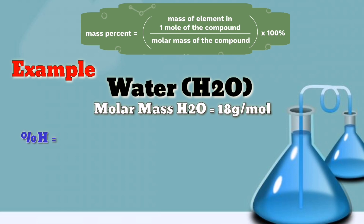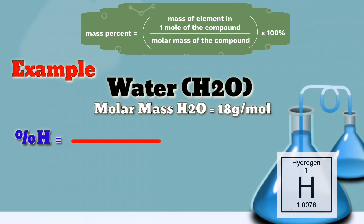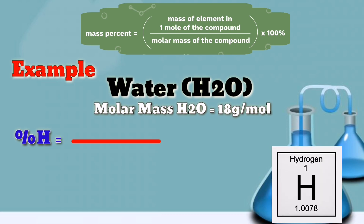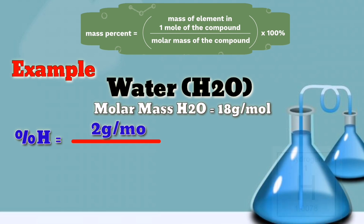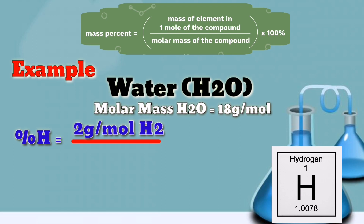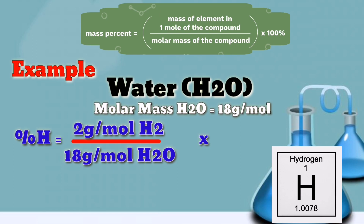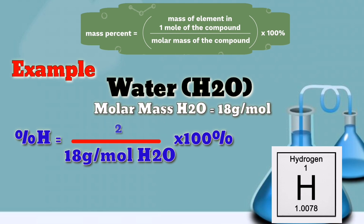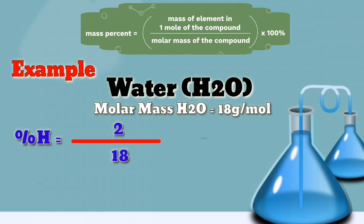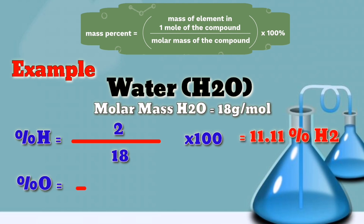Now let's get into the formula. The percentage of hydrogen equals the atomic weight of hydrogen, which is 1 gram per mole. Since we have 2 atoms of hydrogen, we have 2 grams per mole. Divided by the molar mass of water, that is 18 grams per mole, times 100 percent. So 2 divided by 18 times 100 equals 11.11 percent hydrogen.